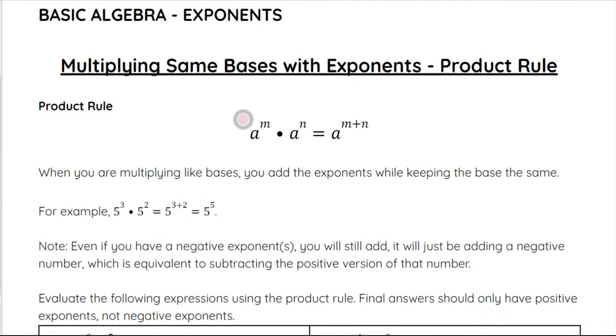So for example, we have a to the m times a to the n. Notice the bases are the same. We have a base of a and a base of a, and we have exponents on each of those bases. And what we do to combine these together into one base and one exponent is we leave the same base. So the base remains a, and then we add together the two exponents, m and n, to be our new exponent on that single base. So again, when you're multiplying like bases, we add the exponents together while keeping the base the same.